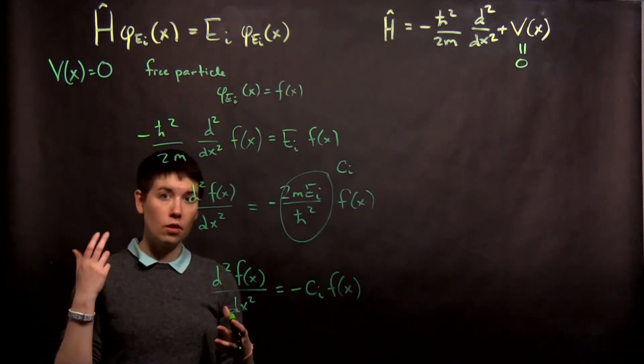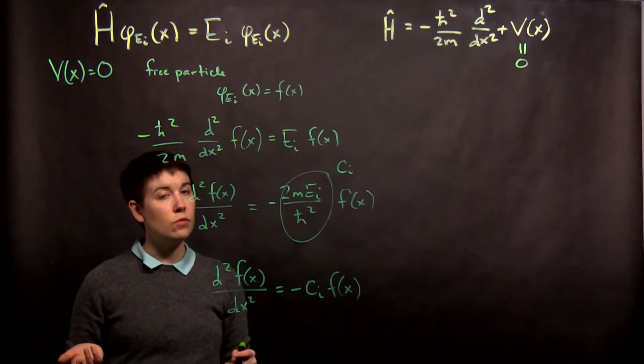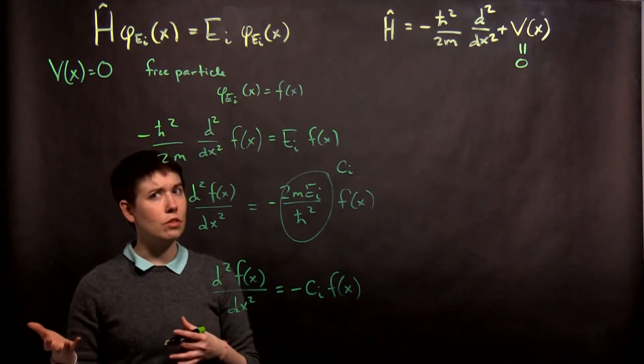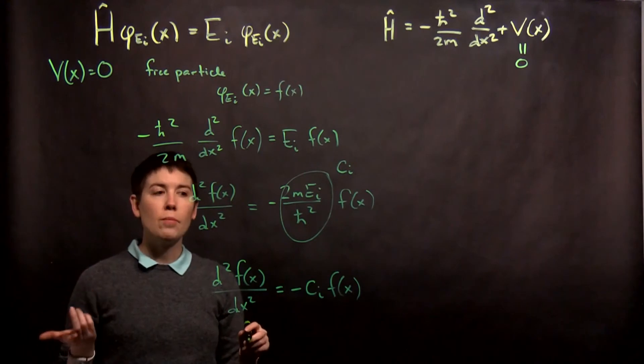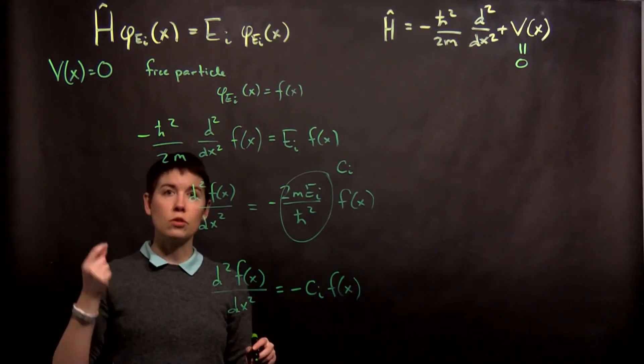Now if we take the second derivative of for instance x squared, first derivative would give us 2x, second derivative would give us 2. Clearly the second derivative then is not proportional to the function itself. So what type of function will actually be once you've taken its second derivative proportional to itself?